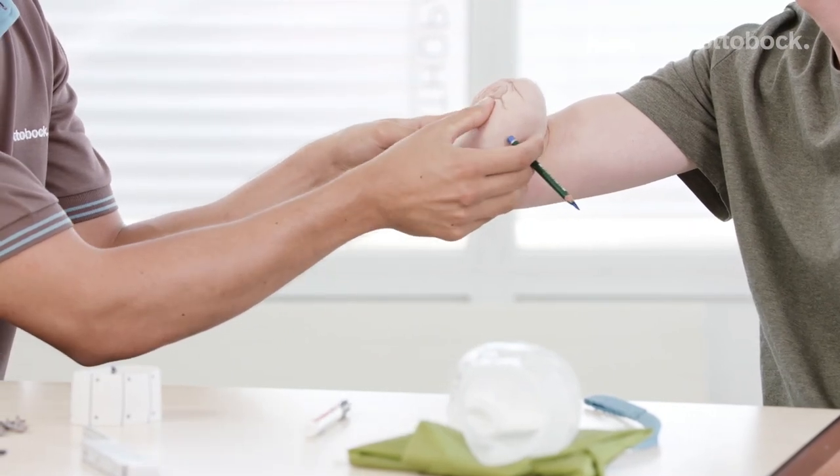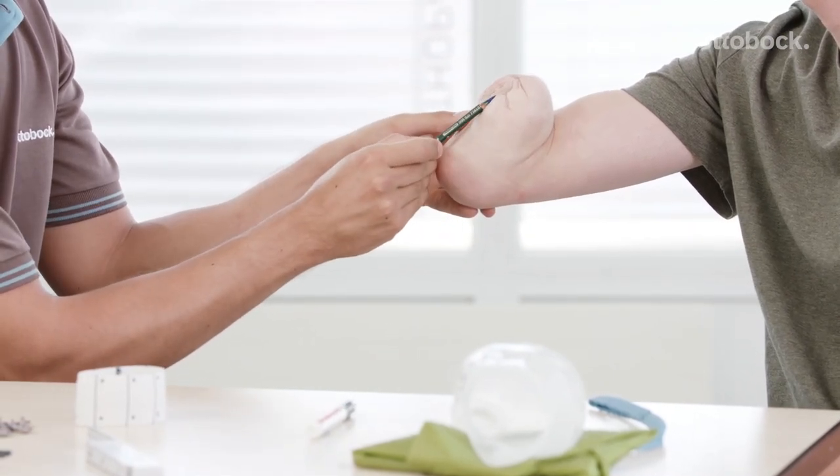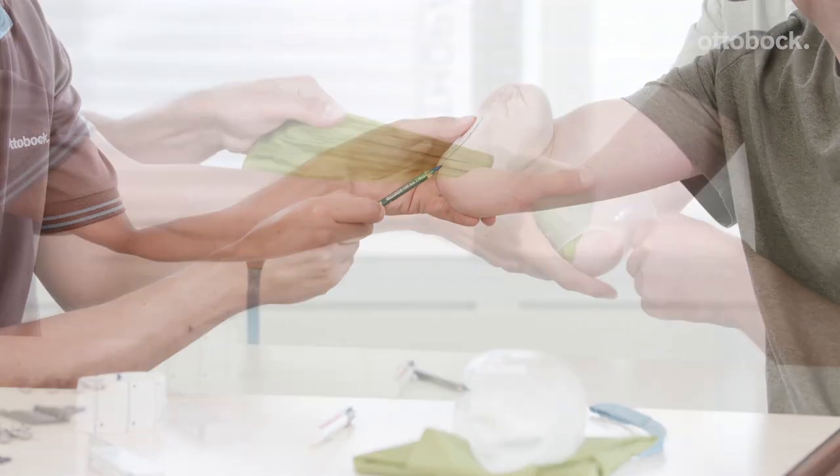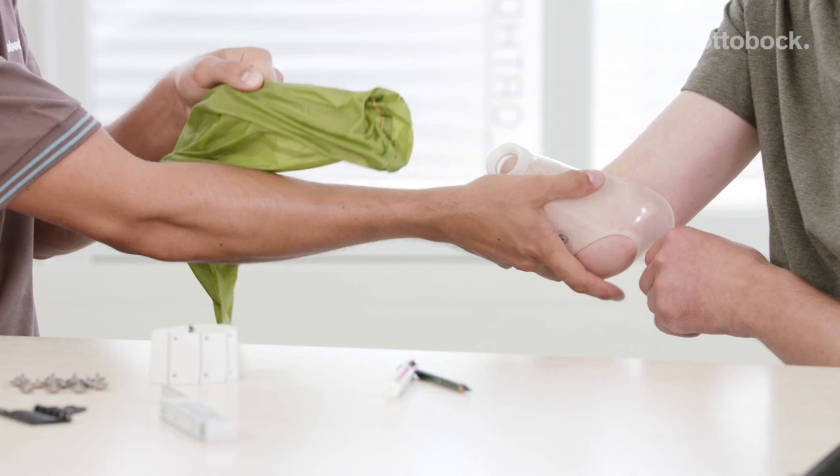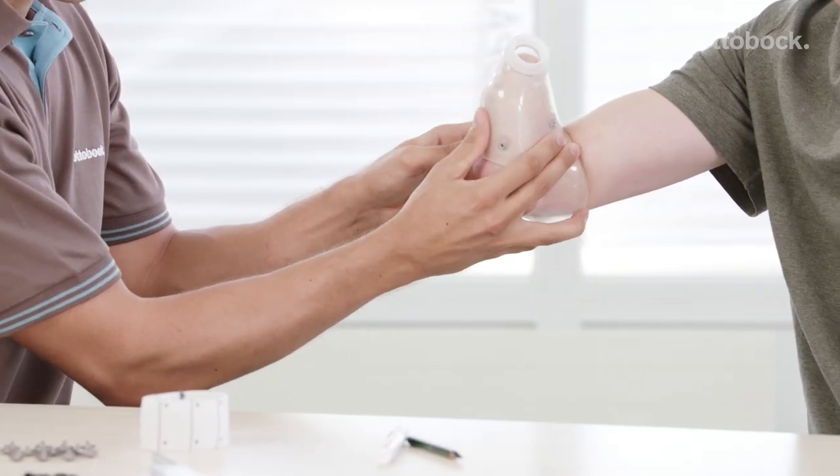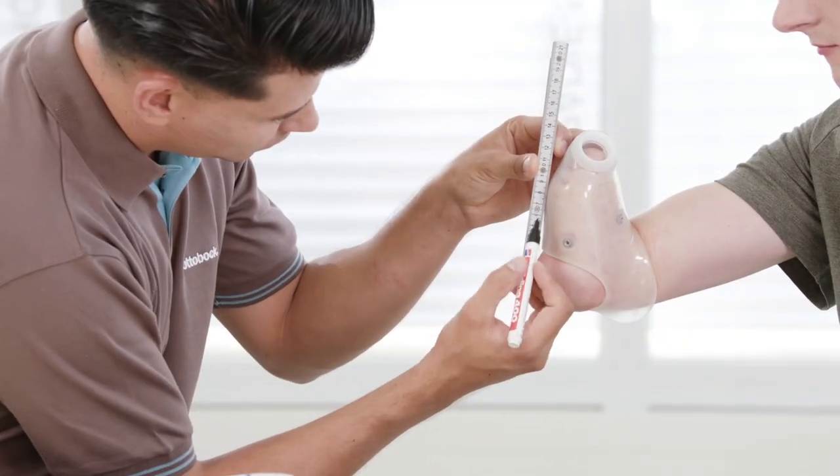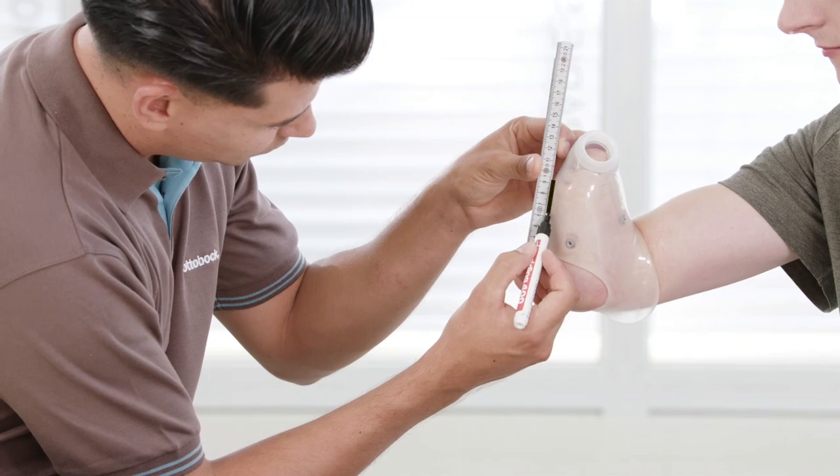Begin by marking the direction of the ulna along the skin. Don the inner socket. Locate the ulna and mark its direction along the inner socket. Then draw a line 6-7 cm distal to the olecranon.